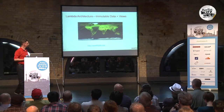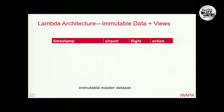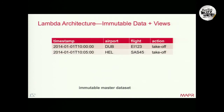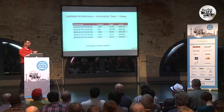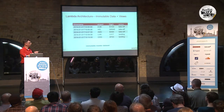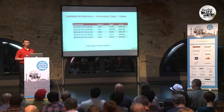Let's have a look at a concrete example. I took this from openflights.org because they have the data available. For an immutable master dataset, you always have timestamps. This says: this flight, EI123, took off in Dublin at a certain point in time. Rather than updating a record in place for the next day, you would append another record. You always keep the data in its rawest form — you never update anything in place.